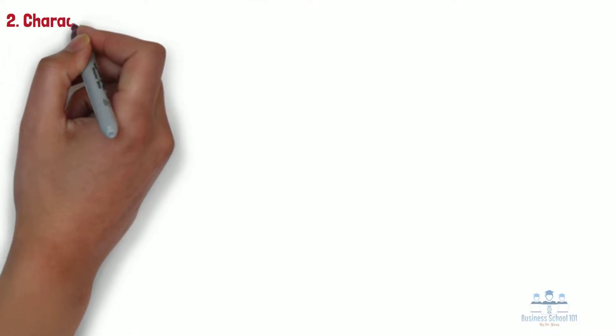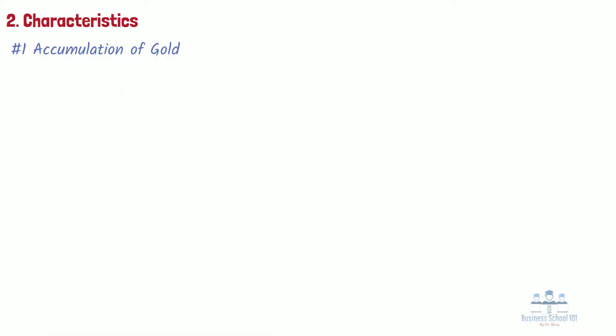Section 2: Characteristics. In general, mercantilism has the following characteristics. Number 1: Accumulation of gold. Gold was associated with wealth and power. It not only allowed nations to pay for soldiers and expand the empire, but also served as a symbolism of wealth. Gold mines were in short supply in colonist nations such as Great Britain, France, and Spain, so they relied on their colonies to provide its supply. By procuring raw materials from the colonies, they would convert them to final goods and sell them back for a profit in gold.